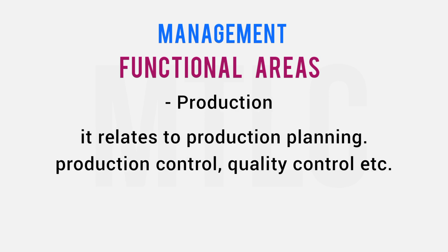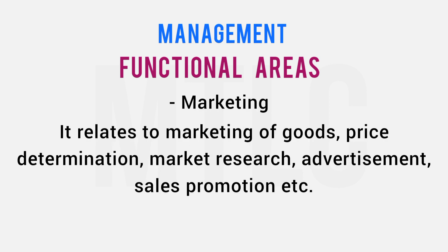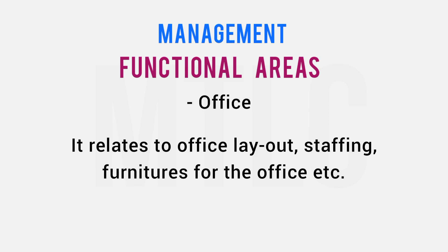Production management deals with where and how to produce goods — like in a pharma company, how to carry on production on a day-to-day basis. Marketing management covers where to produce goods and where to sell them. Office management deals with layout, staffing, furniture, and how to run office operations.